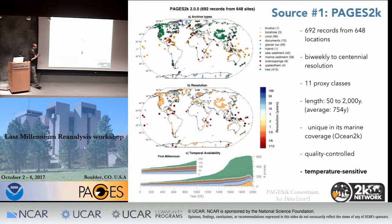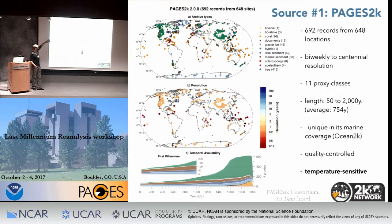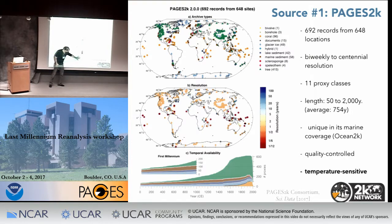For Pages 2K, this is a highly collaborative endeavor, mostly wrangled by Lucien von Gunten, who kept us all in line for a few years. About 100 co-authors participated in this effort. We gathered roughly 700 records from 650 locations around the globe. There's a very wide diversity of proxies — quite a bit of tree rings, which make up more than 60 percent of the database in recent times, but they peter out fairly early.